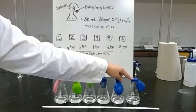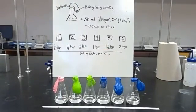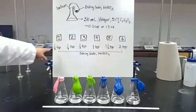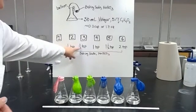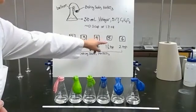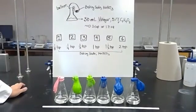We have 7.228 grams in flask number five, and we have 9.628 grams of baking soda in Erlenmeyer flask number six. These correspond to one-eighth, one-fourth, one-half, one, one and a half, and two tablespoons or teaspoons of baking soda.